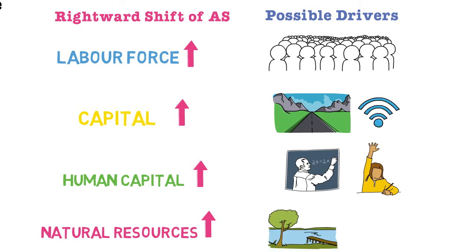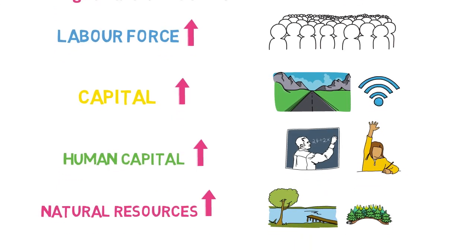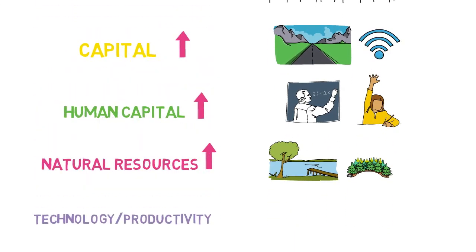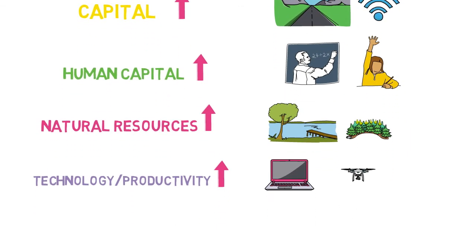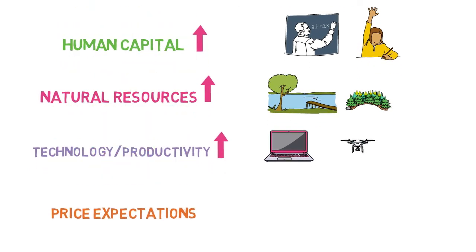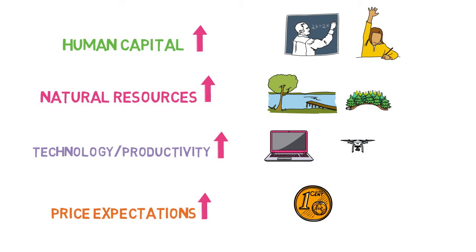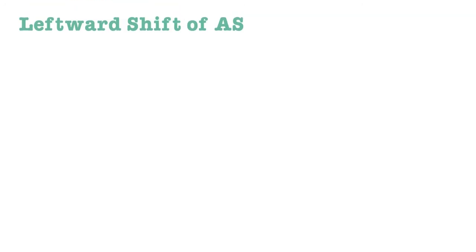Depending on how a country manages its natural resources, aggregate supply may increase as well — for example, mineral deposits, clean water for waste removal, investment in timber and forests. Technology, the binding factor, can also increase the supply of an economy through domestic firms spending on R&D, or foreign direct investment improving the productivity and technology base. Finally, if expected price levels were to decrease in the economy, this would increase short-run aggregate supply.